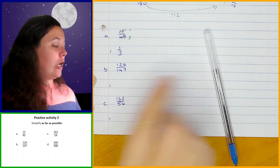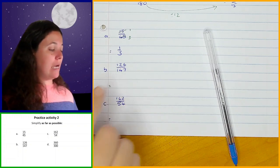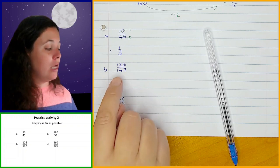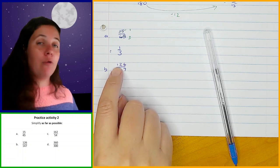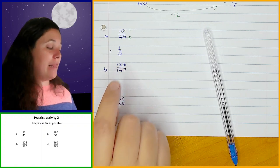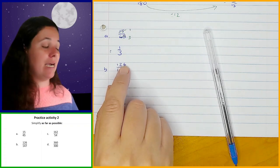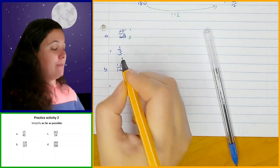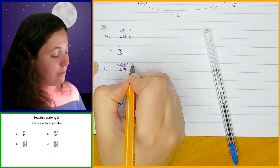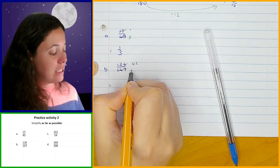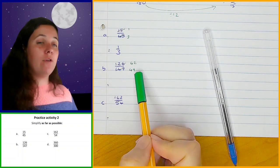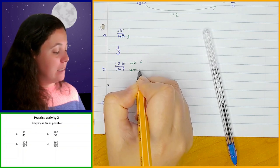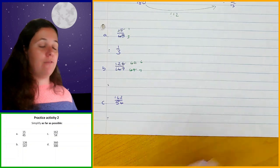Next: 126 over 147. It's a little more difficult to see the common factor — they're not both even. Checking divisibility by 3: 1+2+6=9, a multiple of 3; and 1+4+7=12, also a multiple of 3. Dividing both by 3 gives 42 over 49. Both 42 and 49 are multiples of 7: 42 divided by 7 is 6 and 49 divided by 7 is 7. So this fraction simplifies to 6 over 7.